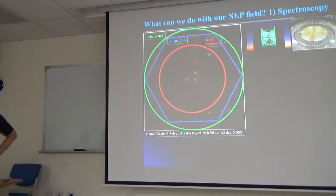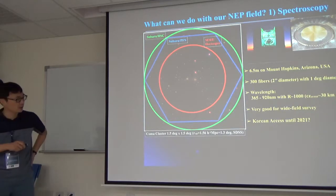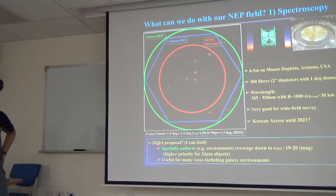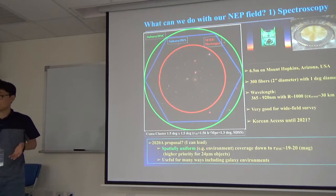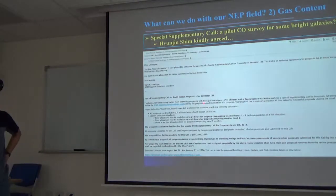We can wait until the Subaru PFS is available. But for now the MMT Hectospec is available. It also has one degree diameter field of view, fortunately. This is very good for wide field survey. Unfortunately Korea, we have some access until 2021. My idea is we plan to submit a proposal to do a spectroscopic uniform, that's the key. To study something like the environment of galaxies down to any magnitude that we want. This can be useful for many ways including galaxy environment and other studies I guess.